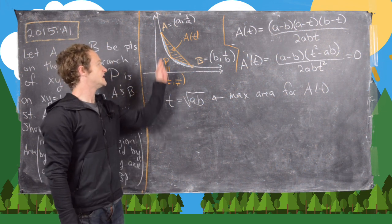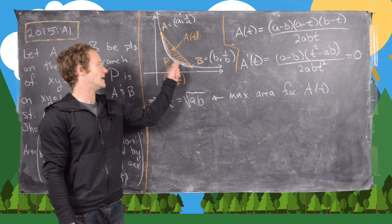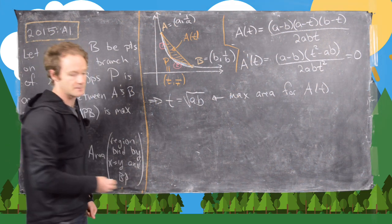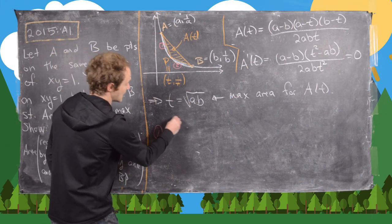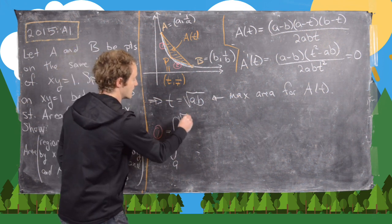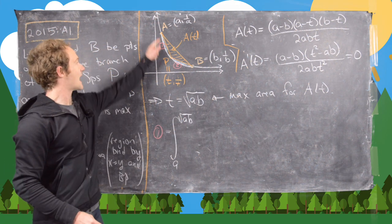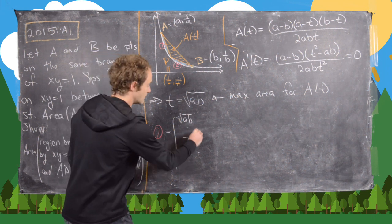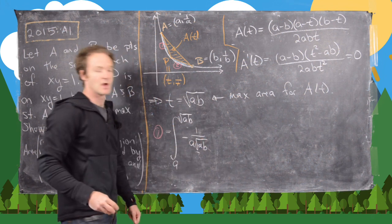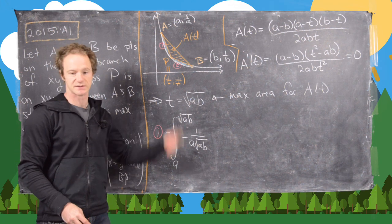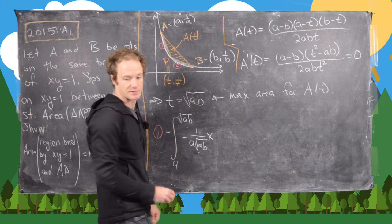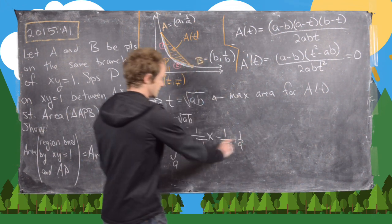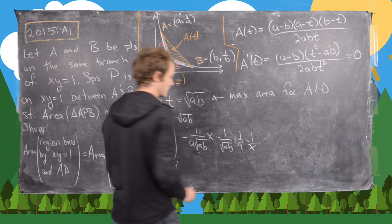Now we want to calculate the two blue areas: the area between AP and the hyperbola, call it Area 1, and the area between BP and the hyperbola, call it Area 2. For Area 1, that's the integral from A to √(AB). The line AP with T = √(AB) has equation: −(1/(A√(AB)))x + 1/√(AB) + 1/A, and we subtract the hyperbola 1/x.